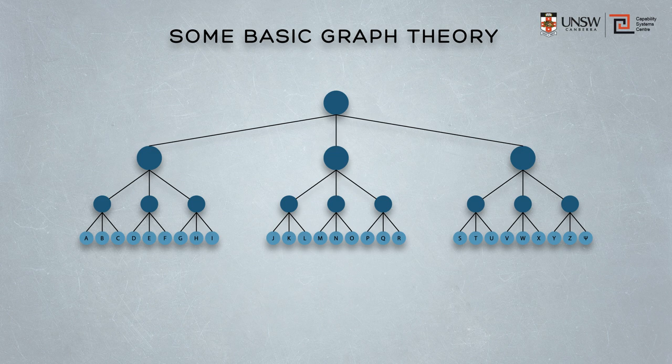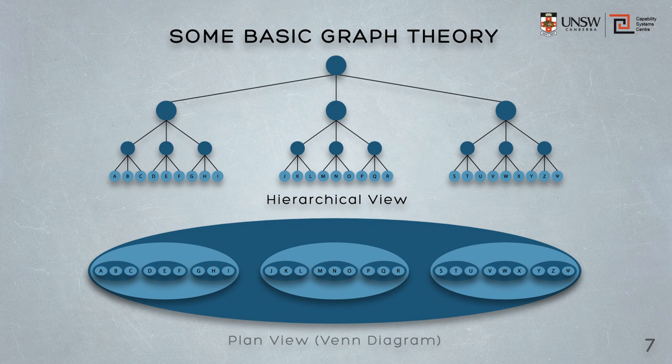Perhaps that's a bit more obvious if we take a slightly different view. If we take a plan view of a nested hierarchy, it appears as a Venn diagram. So here in this diagram we're showing you the tree structure at the top — the hierarchical view — and the same view, the plan view, the Venn diagram view, at the bottom. And you can see then why it's called a nested hierarchy, in that each element is a subset of the parent set at each of the levels.